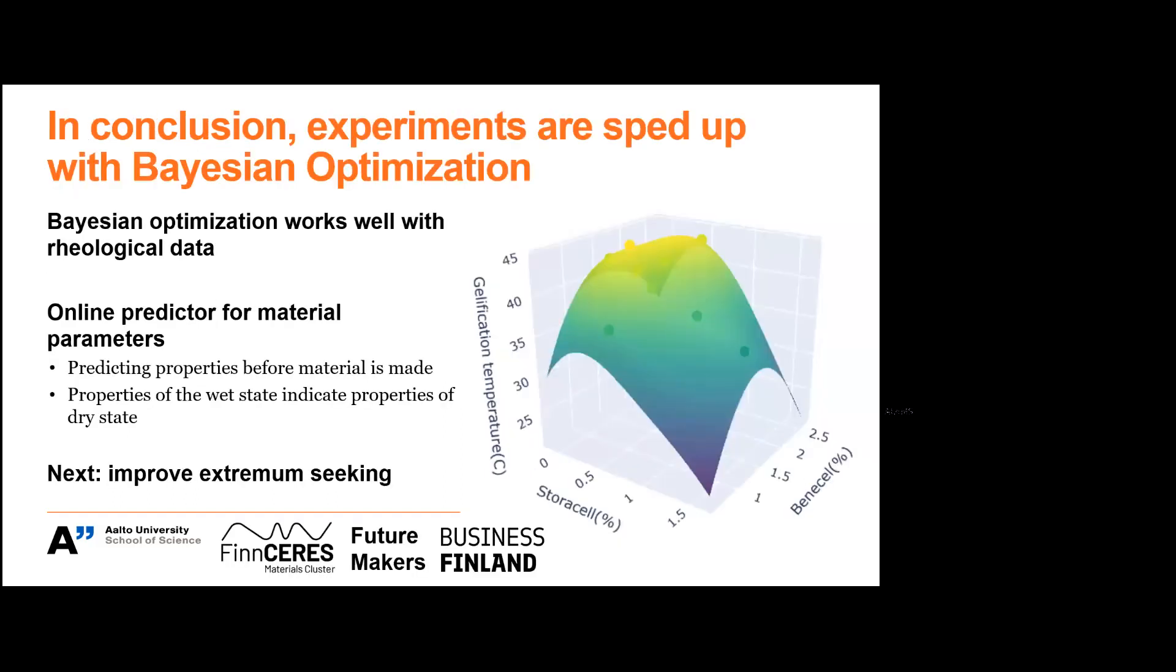So to conclude, this framework that I presented works very well with rheological data. It's rather straightforward to use and we can use it to online predict what are the material parameters. And we can predict the properties of the material before these materials are even made. And these properties of the wet state, they actually indicate very well the properties of the dry state as well. And then what we are going to do next with these algorithms is that we want to improve how to find the extremums of the properties, especially the strength per weight ratio. Thank you.